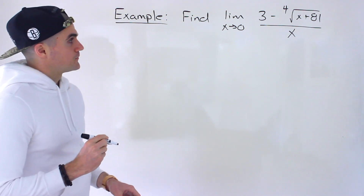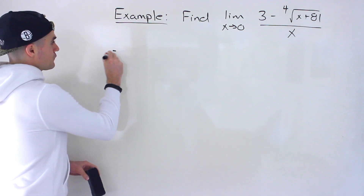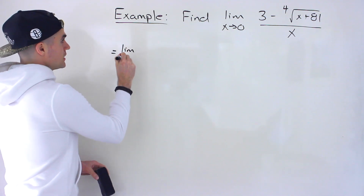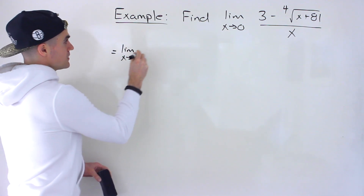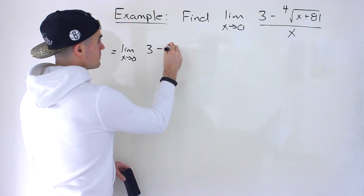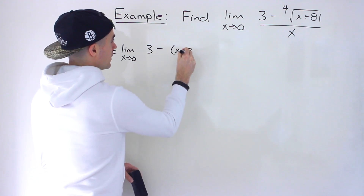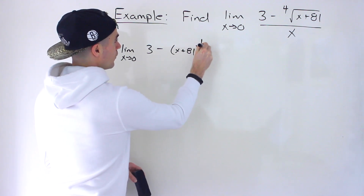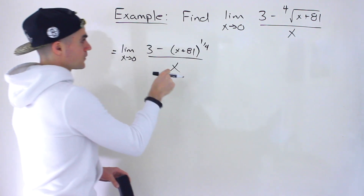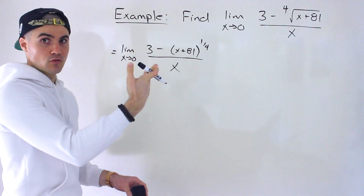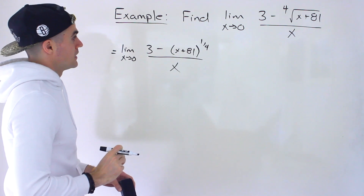So let's rewrite this limit first. The first step is to change that 4th root to a rational exponent. We'll have 3 minus x plus 81 to the power of 1 over 4, all over x. The power of 1 over 4 and the 4th root are the same thing.